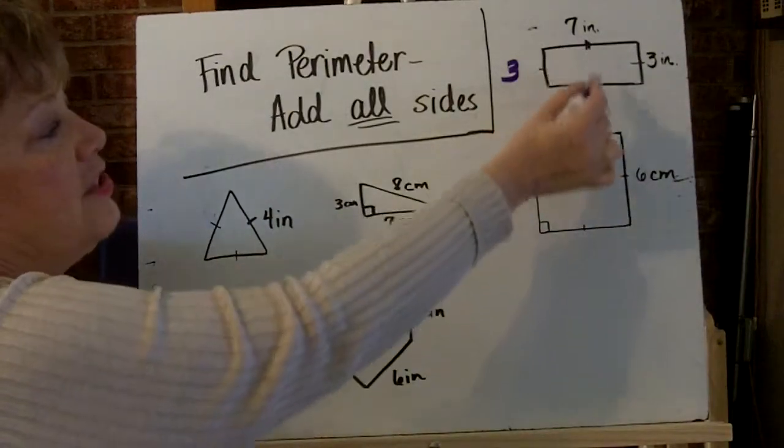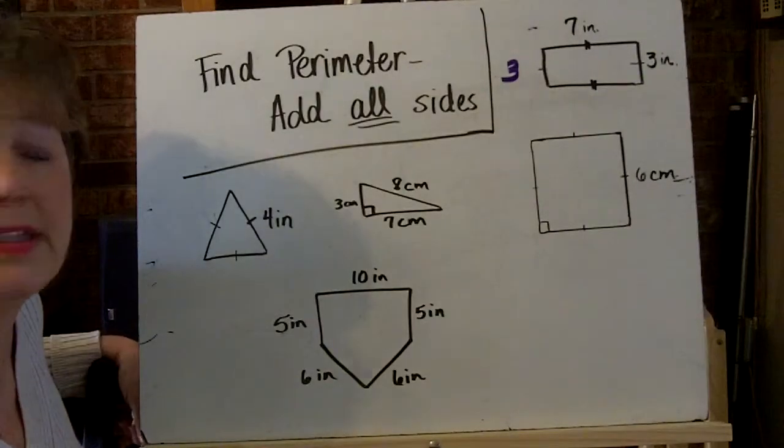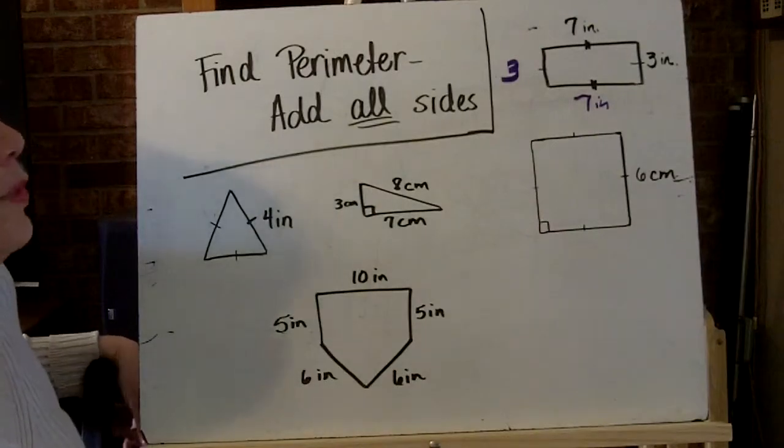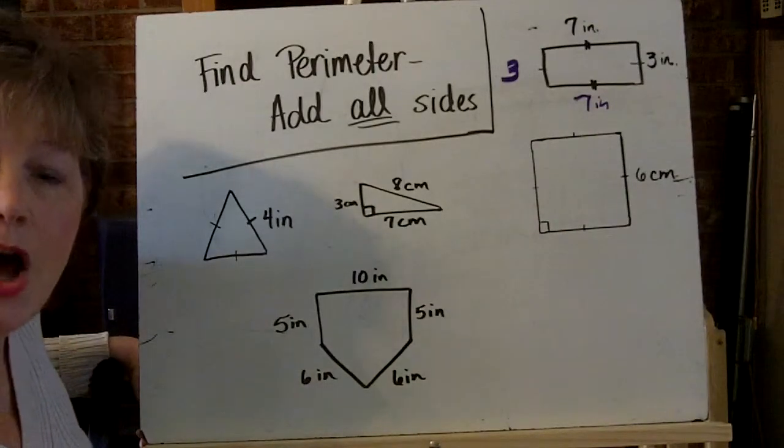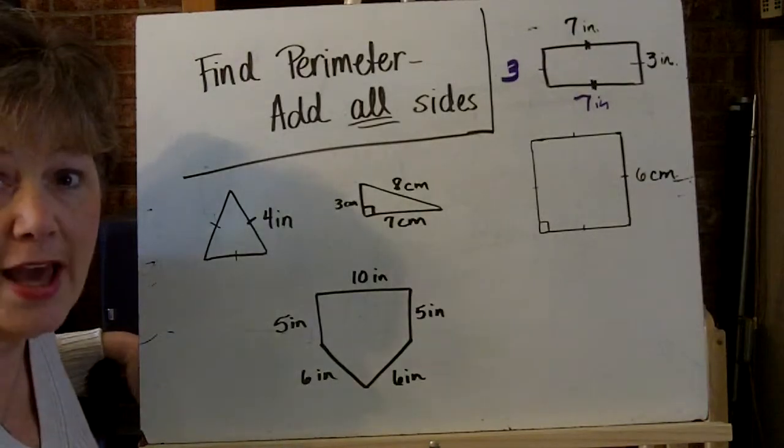And because these have the double marks, that tells me those sides are congruent or the same. And I would know those are seven inches. So to figure out the perimeter, I simply add all the sides.